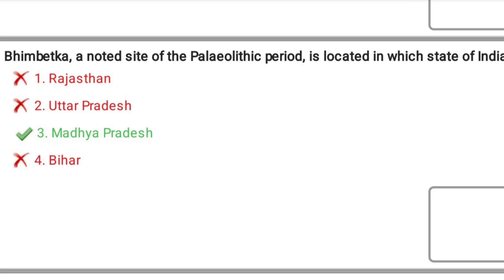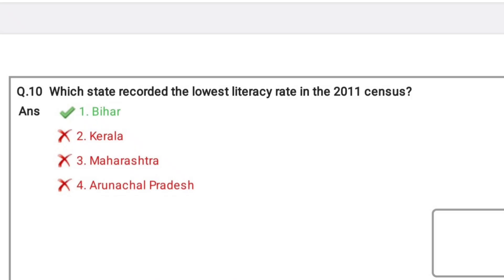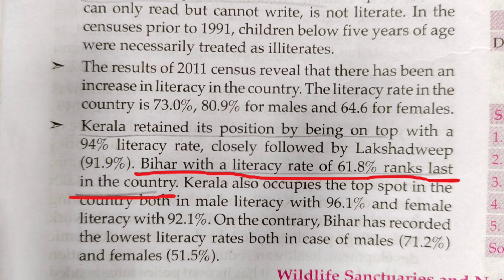Similarly, look at this question. Bhimbetka is located in which state of India? Madhya Pradesh. Similarly, lowest literacy rate in 2011 census? Again direct question. Bihar with a literacy rate of 61.8% ranks last in the country.